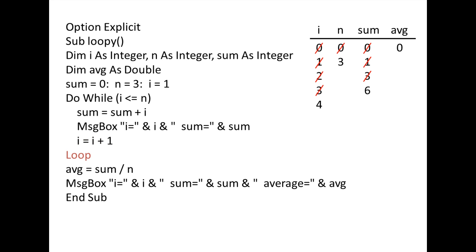We reach the loop statement and evaluate the test condition. Is 4 less than or equal to 3? This expression is FALSE, so the loop is terminated. avg is assigned the value of sum divided by n, which is 6 divided by 3 or 2. Finally, a message box displays the values of i, sum, and avg, which are 4, 6, and 2.